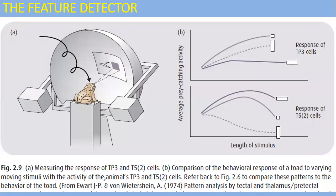Measuring the response of thalamus cells — TP3 and T5 cells — by comparing the behavioral response of a toad to varying moving stimuli with the activity of specific cells in its brain. The response of TP3 cells shows how the worm-like or non-worm-like shape affects activity. T5 cells are more responsive and are acting as a feature detector. According to T5 cells, the response to worm-like shapes was the most positive, indicating pre-capture behavior.